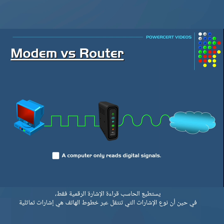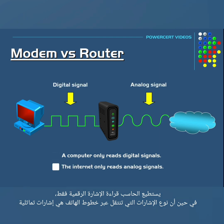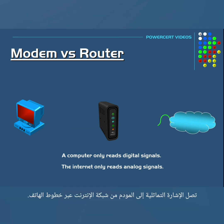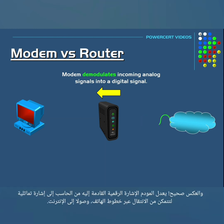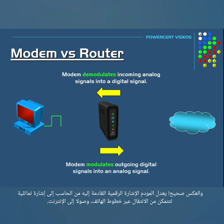A computer only reads digital signals, while signals out on the internet are analog. As analog data comes in from the internet, the modem demodulates the incoming analog signals into a digital signal so that a computer can understand it. And a modem also modulates outgoing digital signals from a computer into an analog signal as it goes out on the internet.